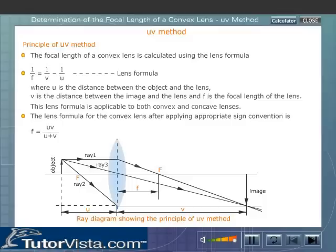Where U is the distance between the object and the lens, V is the distance between the image and the lens, and F is the focal length of the lens. This lens formula is applicable to both convex and concave lenses.